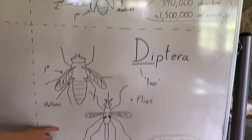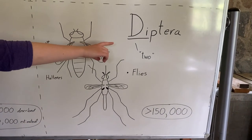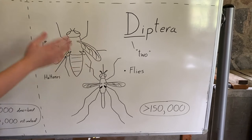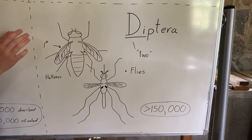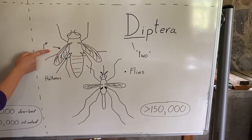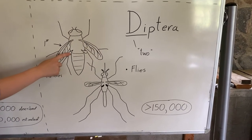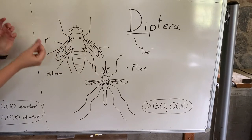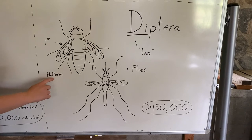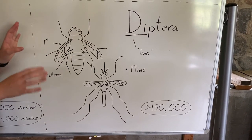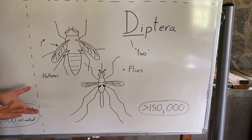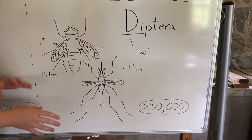The next order is Diptera. Di means two, but there are always exceptions to the rule. Usually insects have two pairs of wings, but the true flies — the Diptera — only have one pair of wings. What would have been their second pair of wings is now just vestigial knobs called halteres. Those are little knobs that help them balance and maneuver in flight, which is why flies are so hard to swat — they're very maneuverable in the air.